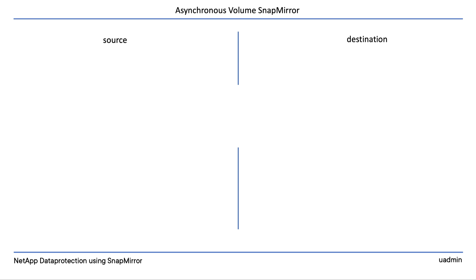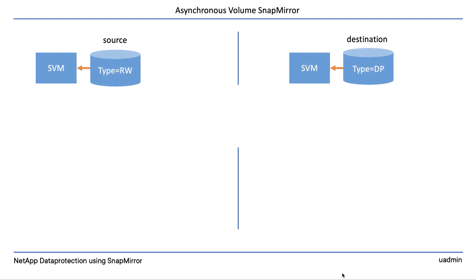To start with, we need two volumes. The source volume should be a regular read-write volume, but the destination volume should be of the type DP — DP stands for data protection. Typically, the source and destination volumes will be in two different SVMs in two different clusters.